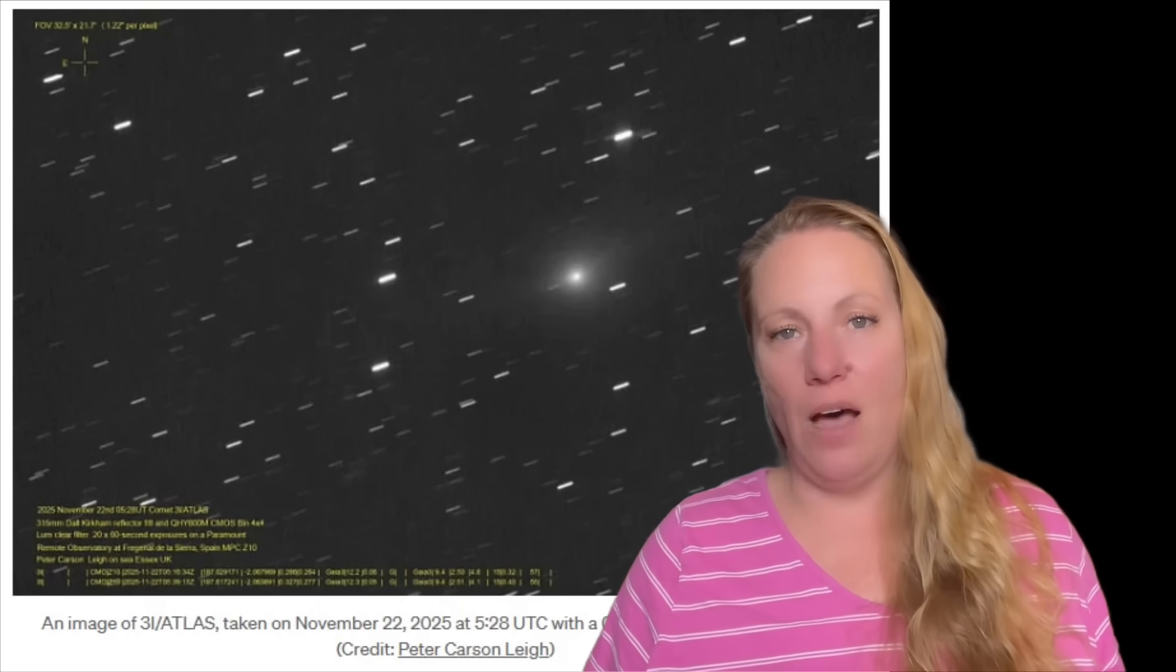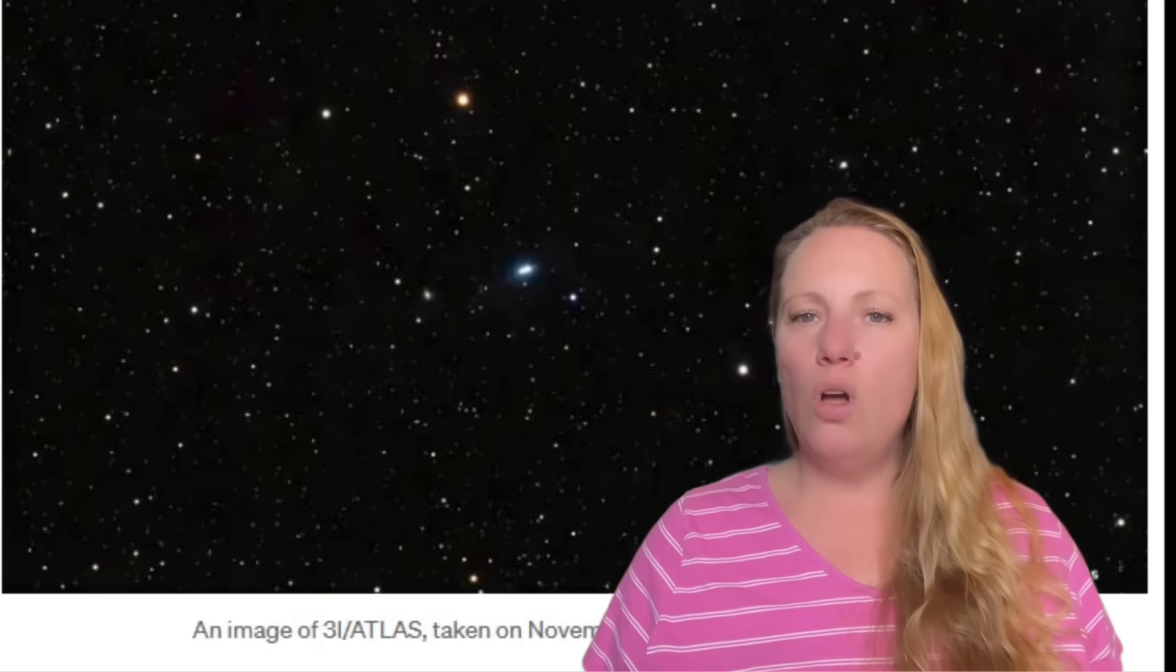Because that means our solar system might not be special after all. And we always thought that, right? There must be others. So cold, metal-rich, ice volcano worlds might be common in the galaxy, actually. Ice volcanoes.